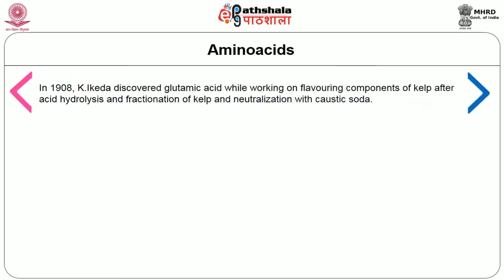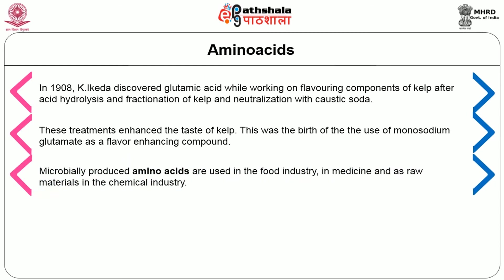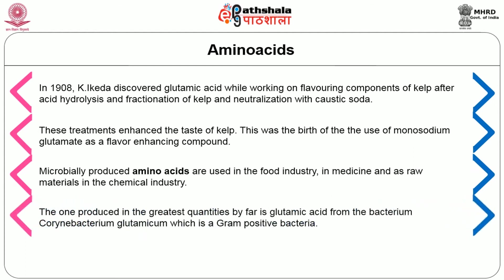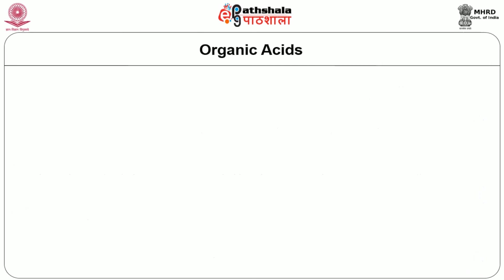First let us see about amino acids. In 1908, Ikeda discovered glutamic acid while working on flavoring components of kelp, after acid hydrolysis and fractionation of kelp and neutralization with caustic soda. This was the birth of the use of monosodium glutamate as a flavor-enhancing compound. Microbially produced amino acids are used in the food industry, in medicine and as raw materials in the chemical industry. The one produced in the greatest quantities is glutamic acid from the bacterium Corynebacterium glutamicum, which is a gram-positive bacterium. The amino acids aspartic acid and phenylalanine are components of the artificial sweetener aspartame and are also synthesized on a large scale.